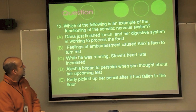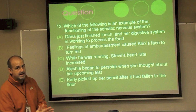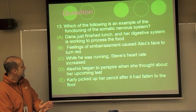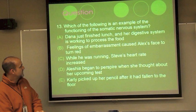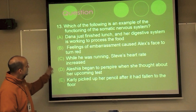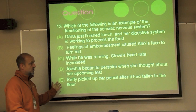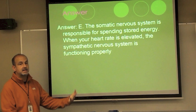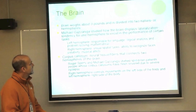Which of the following is an example of the somatic nervous system functioning? Dana's digestive system working after lunch, Alex's face turning red with embarrassment, Steve's heart rate decreasing while running, Alicia perspiring when thinking about a test, or Carly picking up her pencil? The somatic nervous system controls voluntary movements — the answer is Carly picking up her pencil.